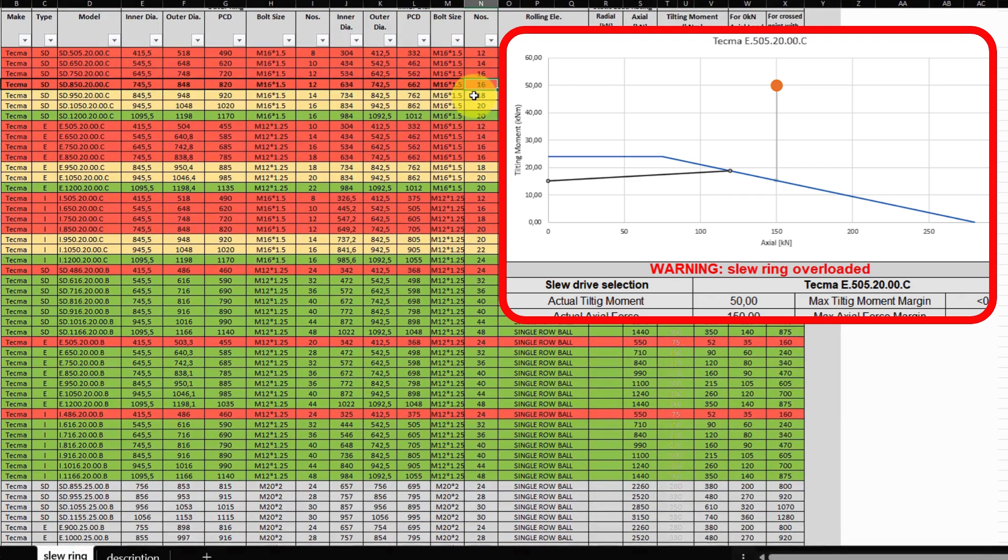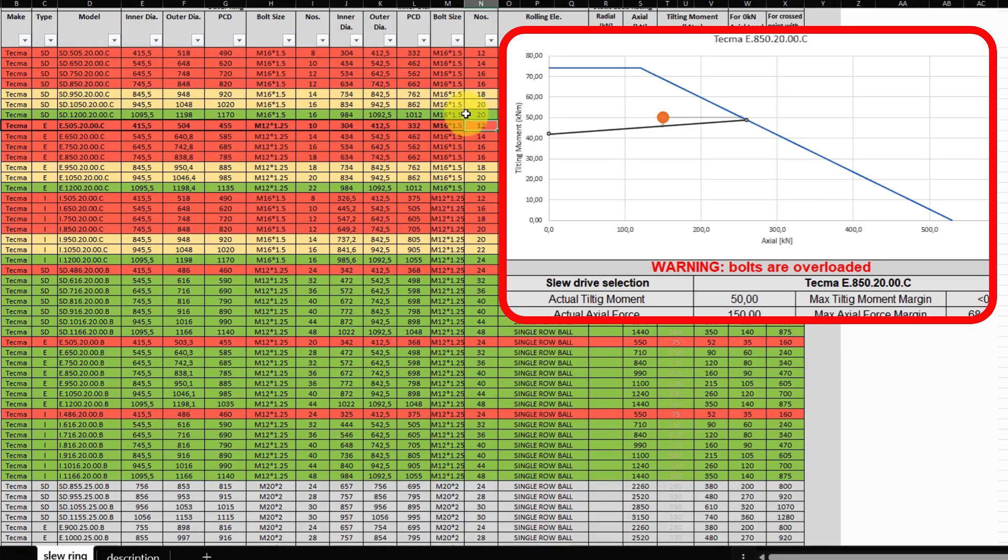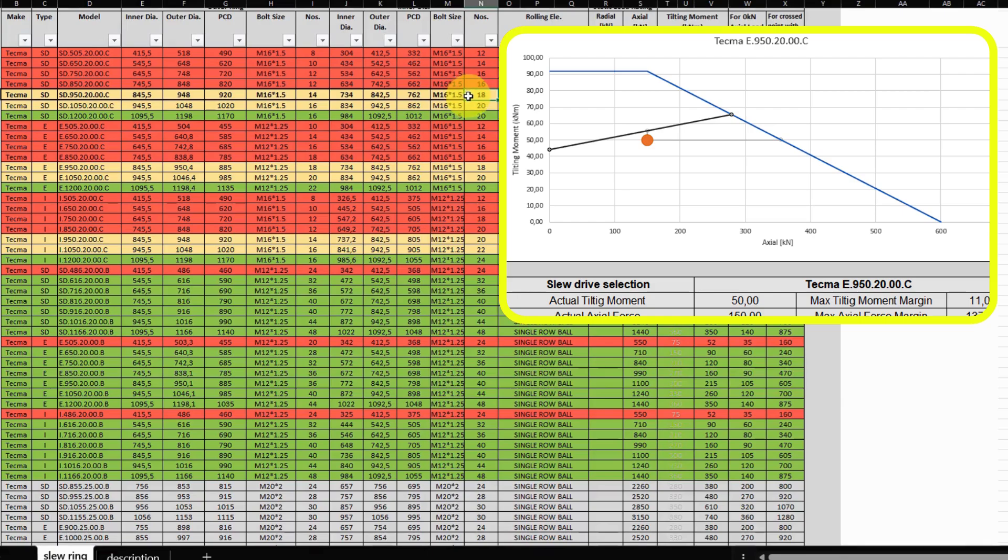Scroll down to the list of bearings, click any of the selections, and you will see how it is loaded in relation to its limit line.